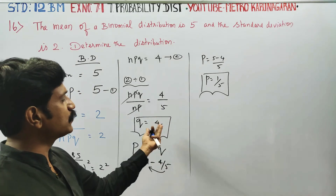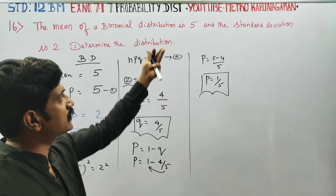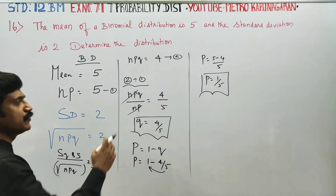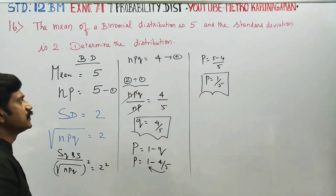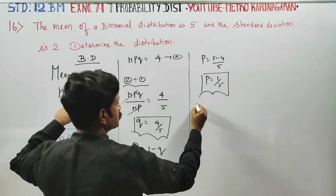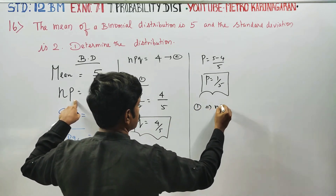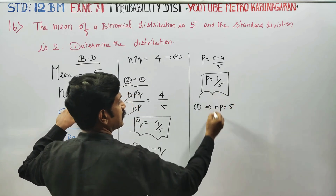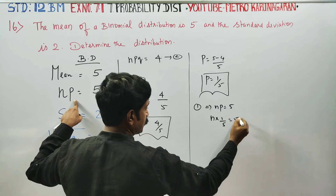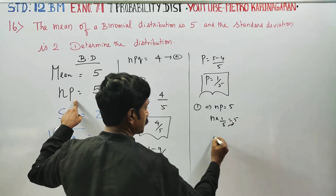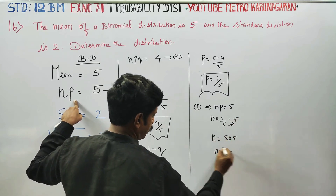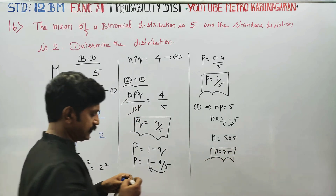np equals 5 and npq equals 4. Since p equals 1 by 5, q equals 4 by 5. Substituting, np equals 5, so n equals 25. np equals 25, so n equals 25.